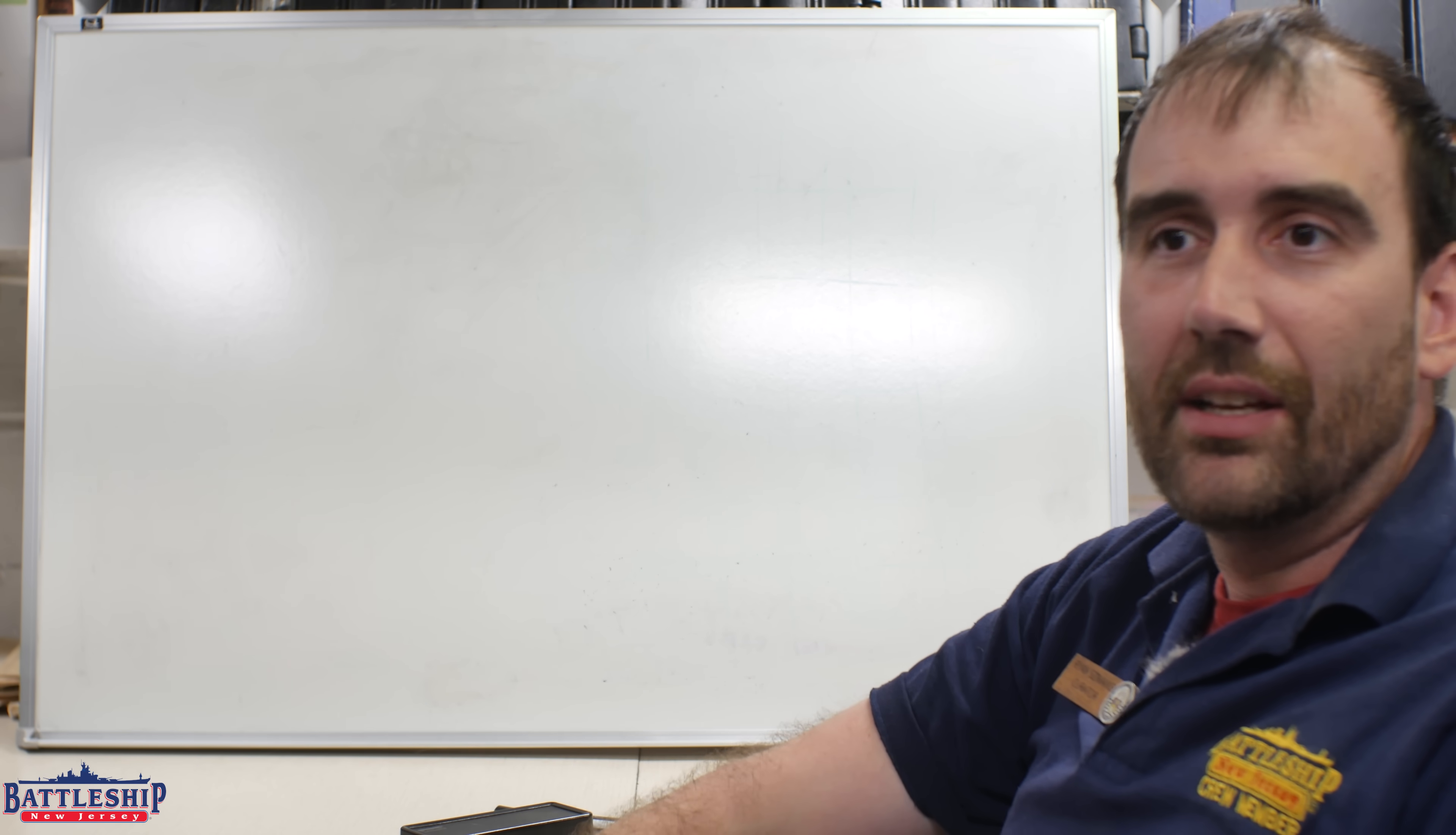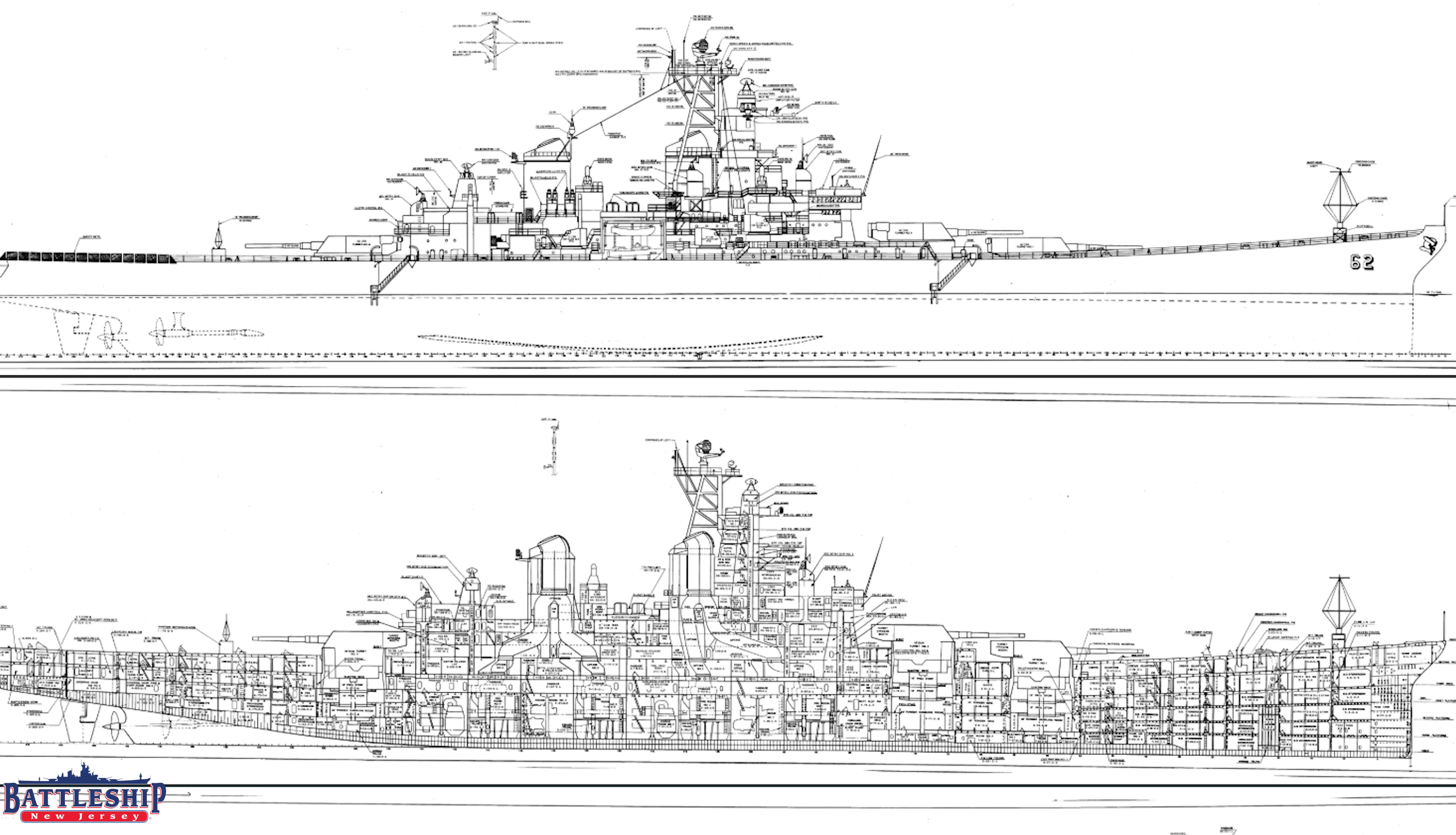So ships like New Jersey, their bows, their sterns, essentially paper mache. The idea is an armor-piercing shell that hits that is going to punch in one side, punch out the other side, and not detonate at all.